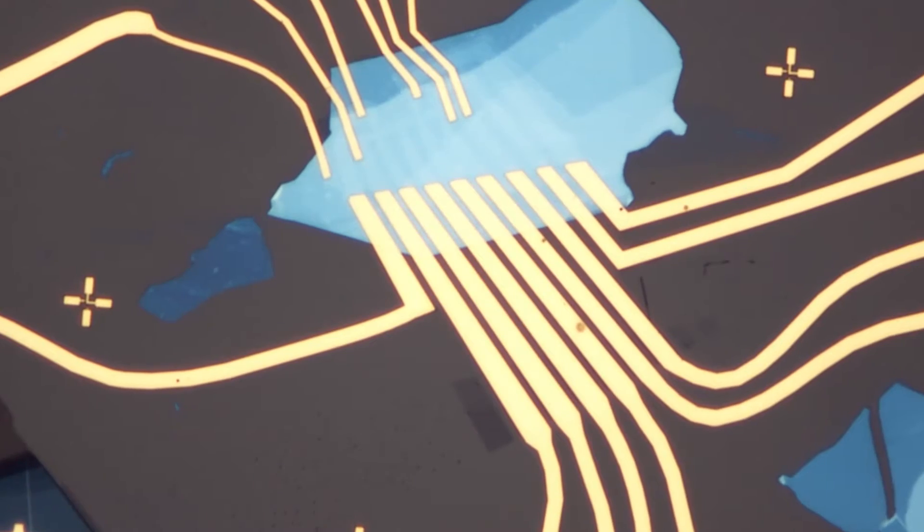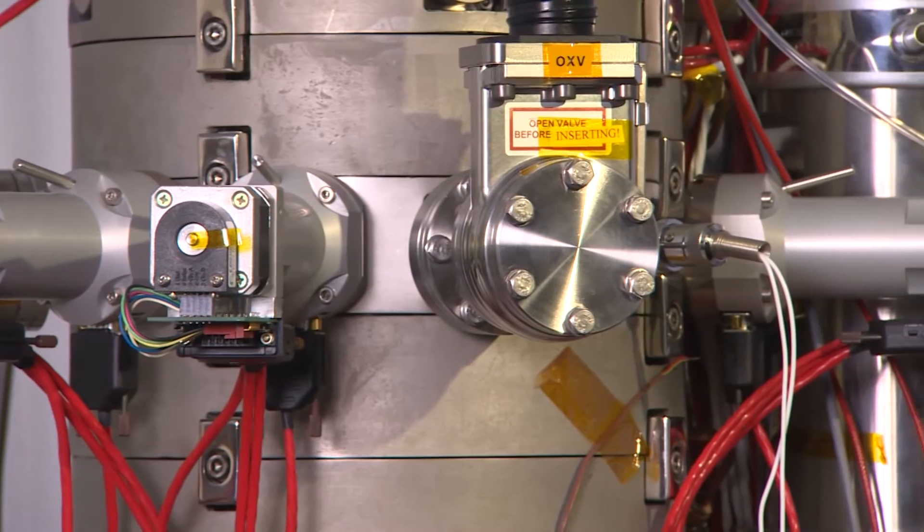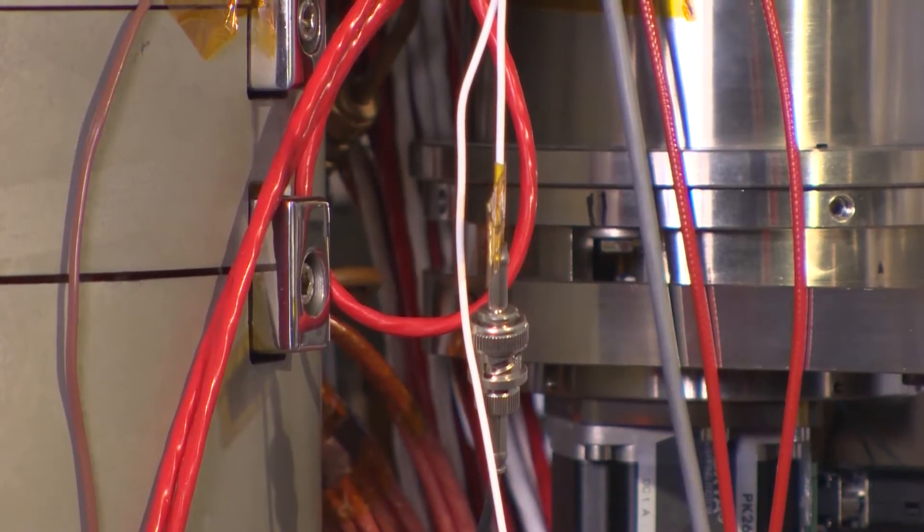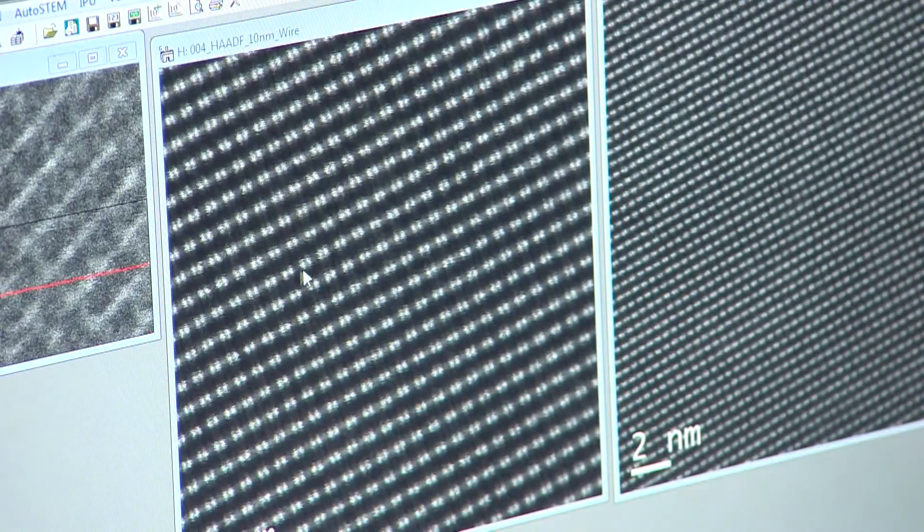As material science progresses towards nanoscience, small features within the sample such as defects or grain boundaries become increasingly important. This is where microscopy comes in. With a microscope we can not only visualize these features, which become increasingly important as the material dimensions become smaller.